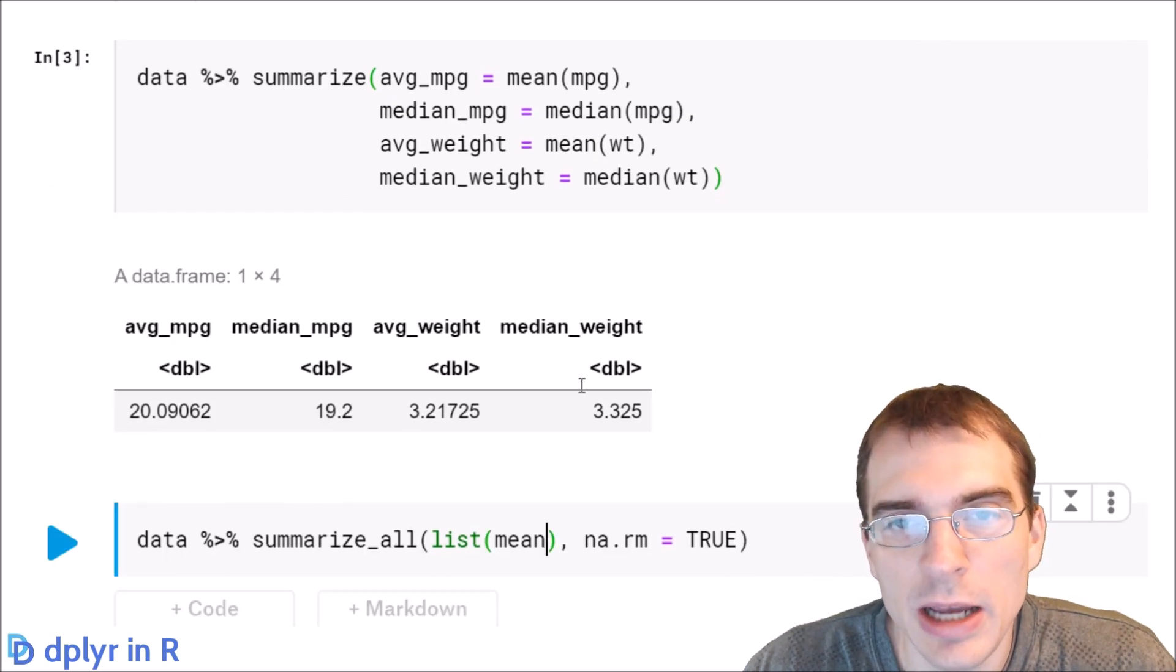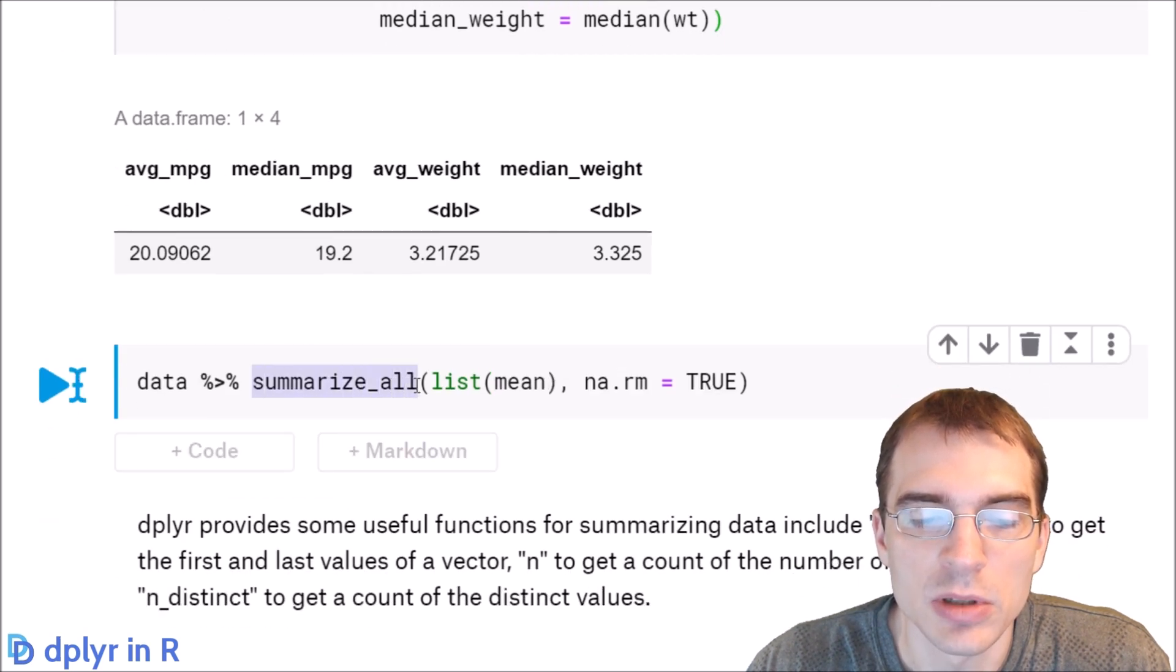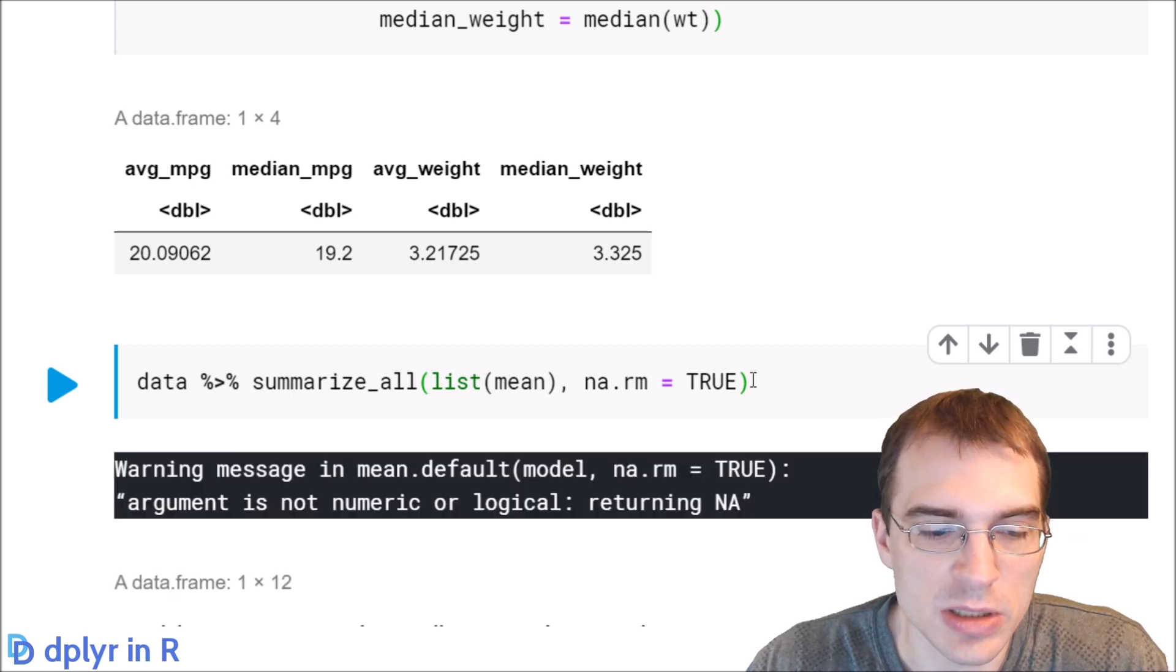You can apply a function to every single column of a data frame with dplyr using the summarize_all function. So in this case, instead of needing to pass in the name of the column, you can just pass a list of the functions that you want to run, and it will automatically give names to the columns for you. You can also pass in names if you want to, but let's just run this and see what happens.